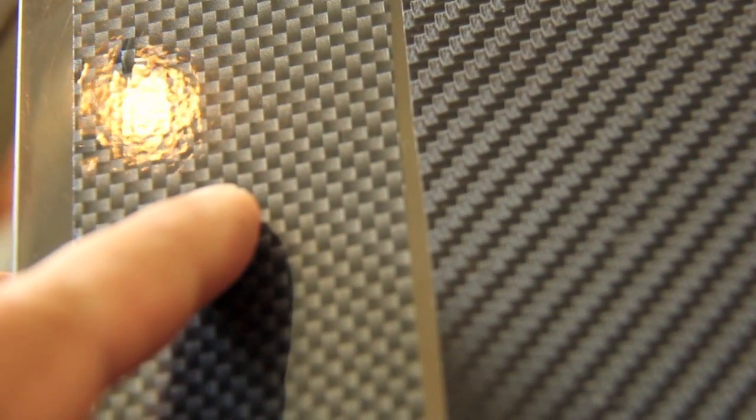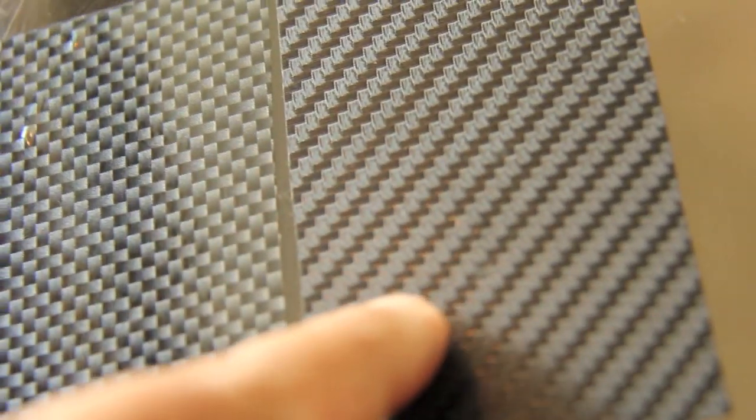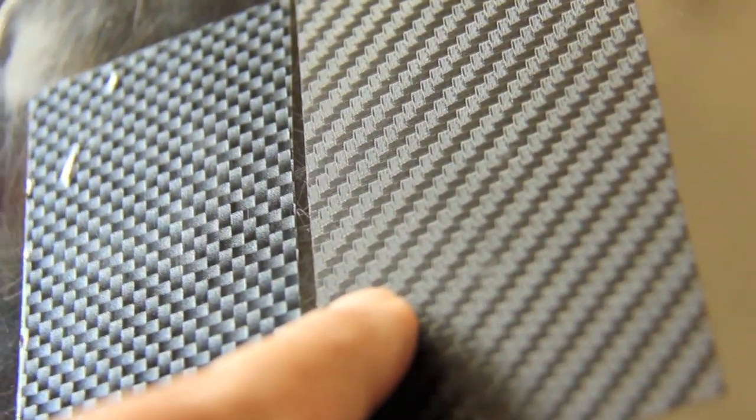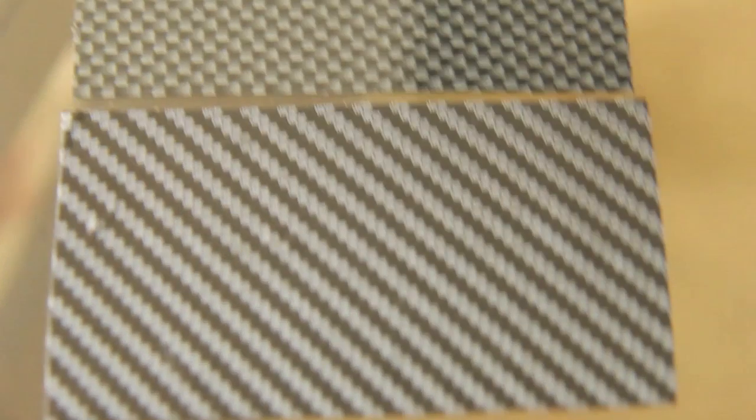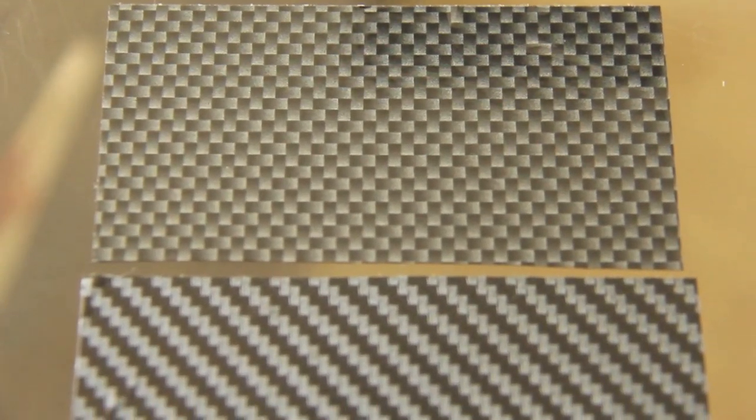Alright, so here they are, side to side. This one is the 2D carbon fiber vinyl, which has a gloss finish to it. And this one is the 3D carbon fiber vinyl, which by far is my top choice. Now, I'm just going to turn it into the light and away from the light, so you can see the difference between the 2D and the 3D.